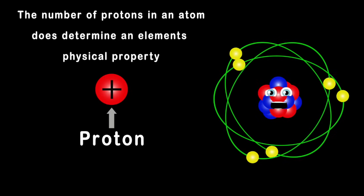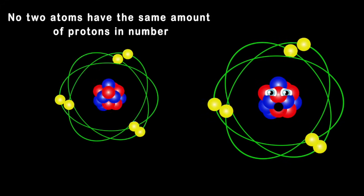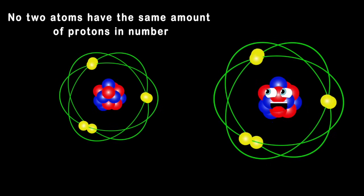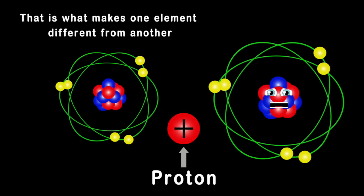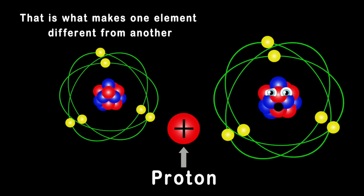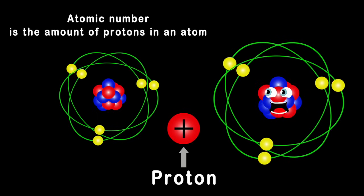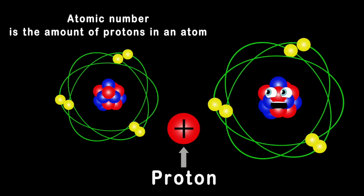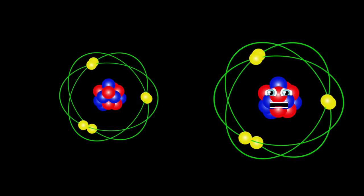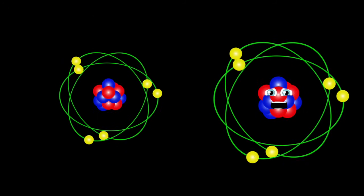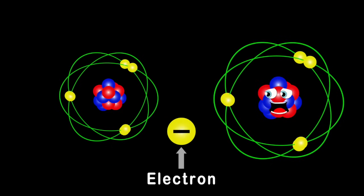The number of protons in an atom does determine an element's physical property. This lesson is large. No two atoms have the same amount of protons in number. That is what makes one element so different from another. The atomic number is the amount of protons in an atom. That concludes this lesson on the nucleus if you can fathom.